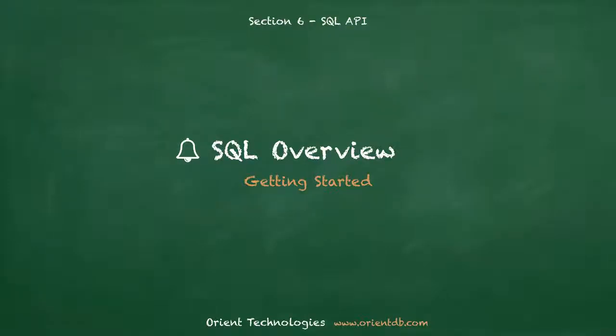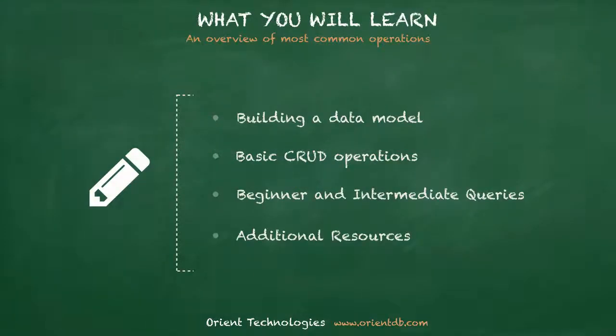Welcome to Section 6 of the OrientDB Getting Started training. This section will give you an overview of the SQL API. It provides functionality to build a model, work with data, and create relationships. We will go through most of the primary functions available in OrientDB. Certain features are not covered, but this course will give you a good level of familiarity. We will cover building a data model, reading and writing data, and queries, all with our superset version of SQL.